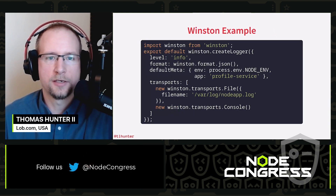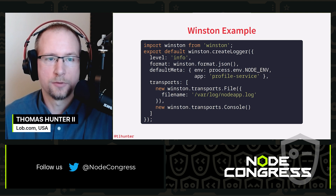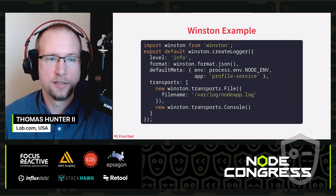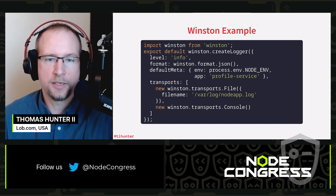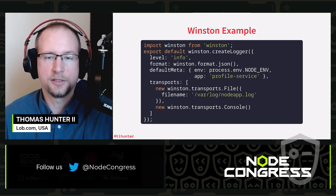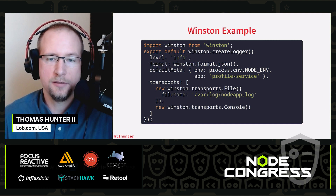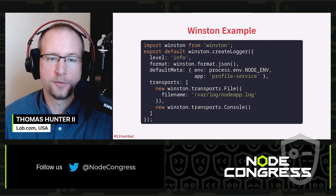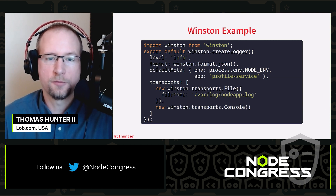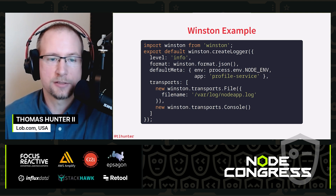Here we have a file that creates a Winston instance and then exports a singleton representation of it. We import the Winston package and create an instance. The level field says we only want to capture info and greater messages. The format field says we want the output in JSON format. DefaultMeta represents default properties available on each log — specifically we're looking at the NODE_ENV environment variable applied to a property called env, and naming the application as profile-service in an attribute called app. This lets us differentiate logs from different environments and applications within our infrastructure.